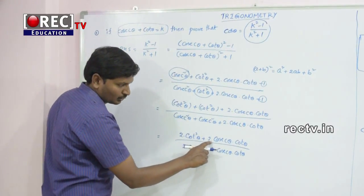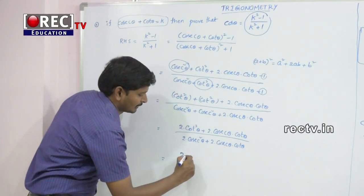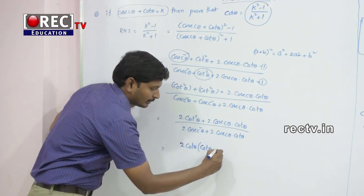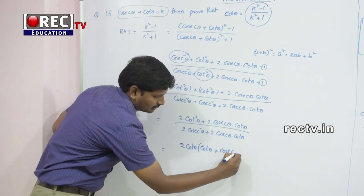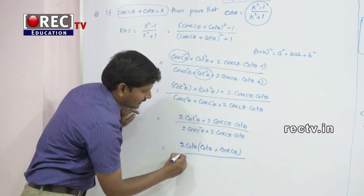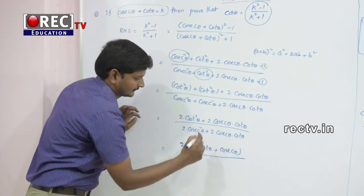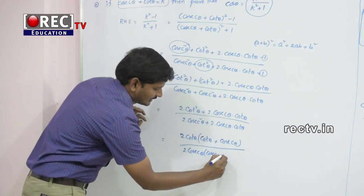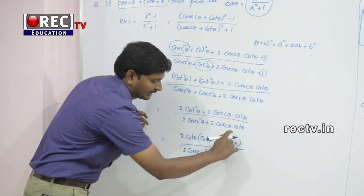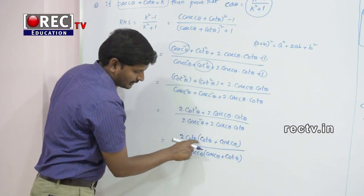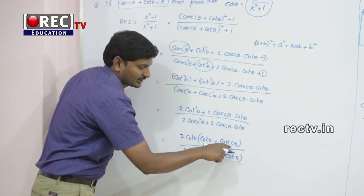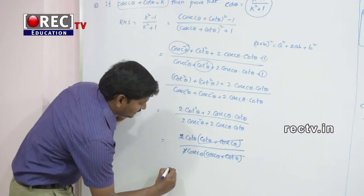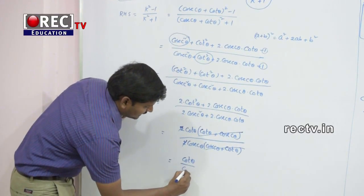Observe the numerator: 2cotθ is common in both terms. Taking out 2cotθ, we get 2cotθ(cotθ + cosecθ). In the denominator, taking out 2cosecθ, we get 2cosecθ(cosecθ + cotθ). Observe that (cotθ + cosecθ) in the numerator and (cosecθ + cotθ) in the denominator are the same, so they cancel. The 2 and 2 also cancel, leaving cotθ / cosecθ.